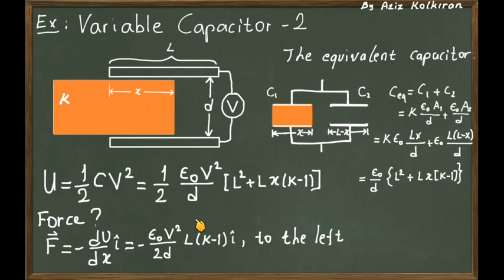So this expression, these terms are always positive. Epsilon 0, d, V squared, L, and K is larger than 1 because it's a dielectric. So this expression is always plus, and we have a minus sign here. So the force you see is in the negative x direction.